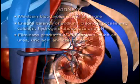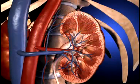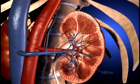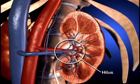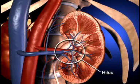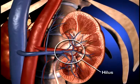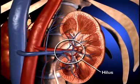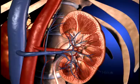The medial border of the kidney is indented by a deep fissure called the hilus, where the blood vessels, nerves, and ureters connect to the kidney.